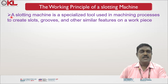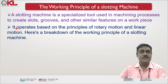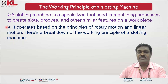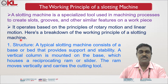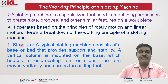The working principle of a slotting machine: a slotting machine is a specialized tool used in machining processes to create slots, grooves, and other similar features on a work piece. It operates based on the principles of rotary motion and linear motion. A typical slotting machine consists of a base or bed that provides support and stability, and a vertical column mounted on the base which houses a reciprocating RAM or slider.